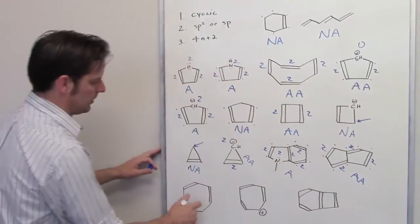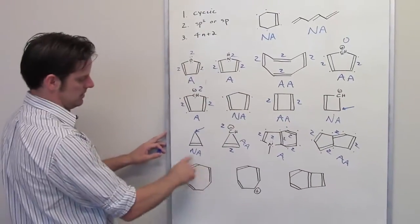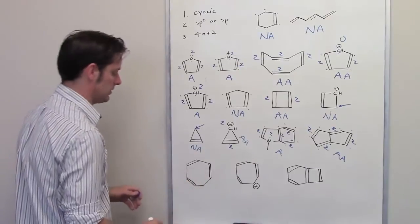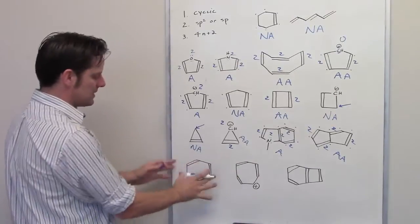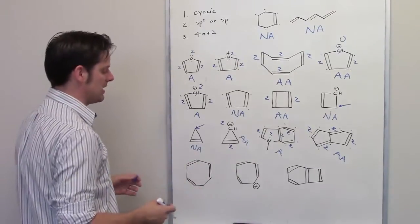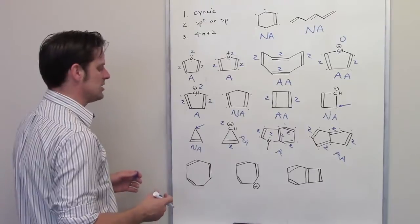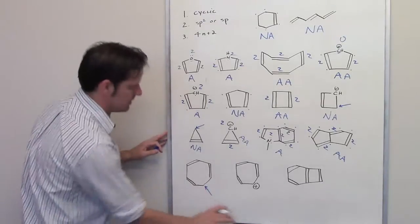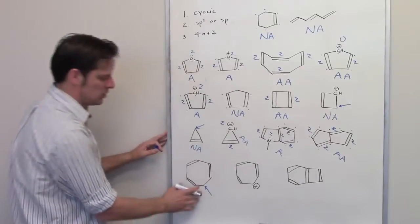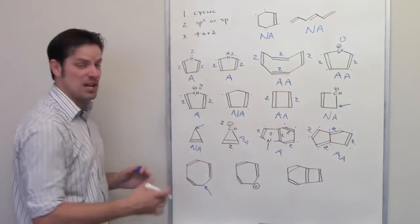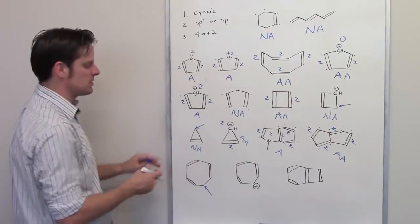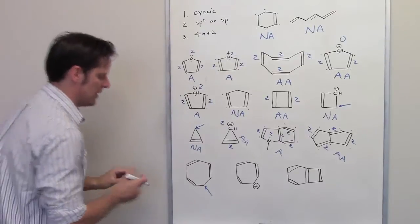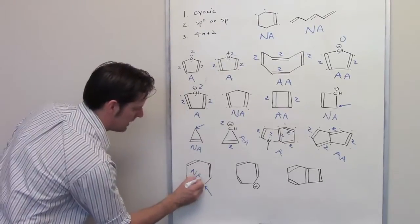Let's look at this molecule — this is a cycloheptatriene. Is the molecule cyclic? Yes. Are all of the atoms in it sp2 or sp hybridized? No — that carbon atom right there is bonded to two hydrogens, making it sp3, and there's nothing you can do about it. This molecule meets criterion 1, but not 2, so it is non-aromatic.